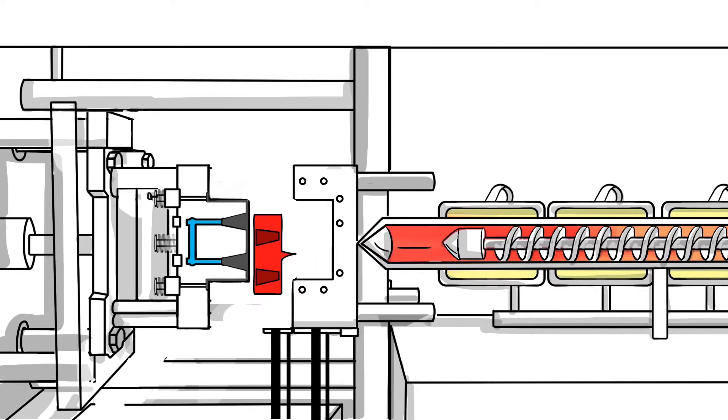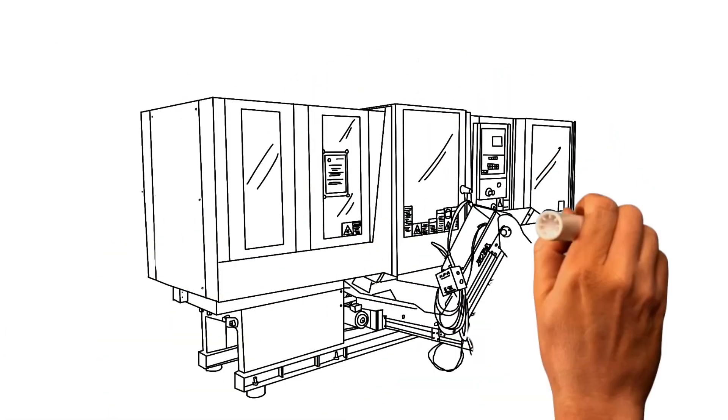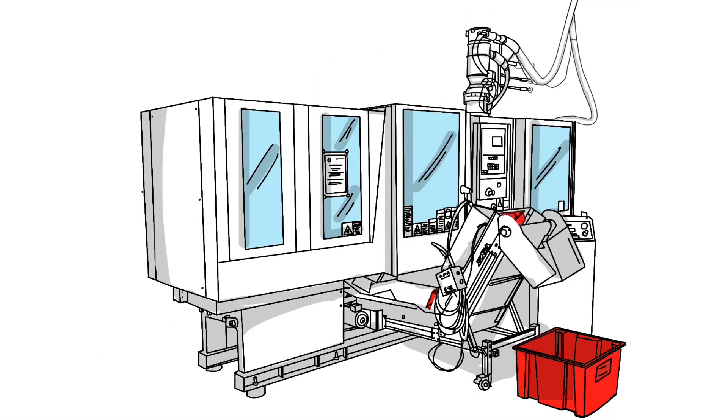Once cooled, an ejector plate helps release the finished part. The finished part is then dropped onto a conveyor belt, which transports the part into a container with the rest of the finished parts.